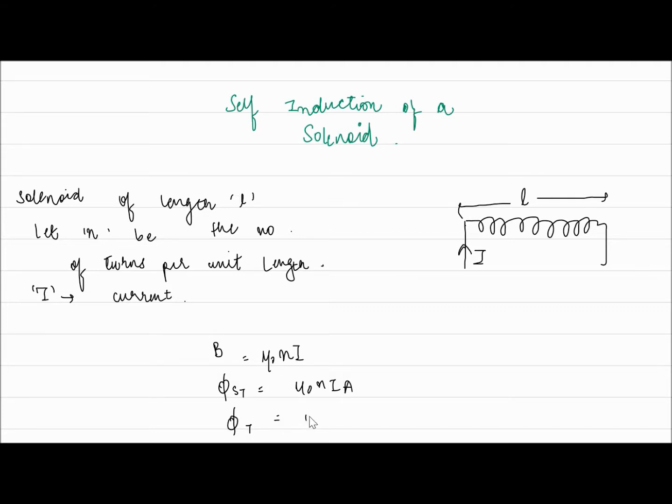The total flux is N times L—that is, the number of turns per unit length times the length of the solenoid—times μ₀NIA.